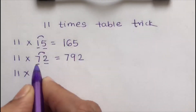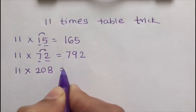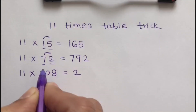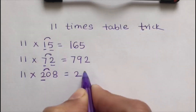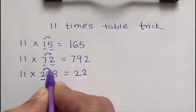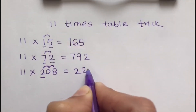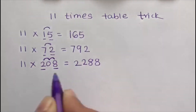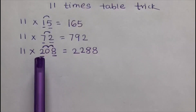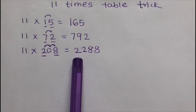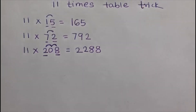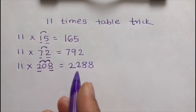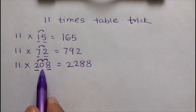Another example: 11 times 208. The first digit is 2, so I write 2 here. Then add 2 and 0, which gives 2. Then add 0 and 8, which gives 8. Then write the last digit, which is 8. You can check: if you multiply 208 by 11 the answer is 2288. So this trick works!